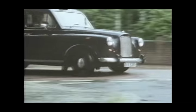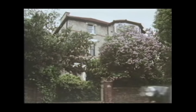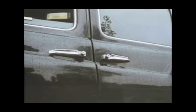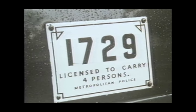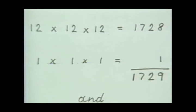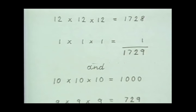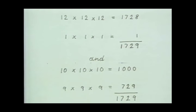No one can understand Ramanujan who does not understand his passion for numbers in themselves. He could remember the idiosyncrasies of numbers in an almost uncanny way. It was Littlewood who said that every positive integer was one of Ramanujan's friends. Hardy recalled: 'I remember going to see him when he was lying ill in Putney. I had ridden in taxicab number 1729 and remarked that the number seemed to me rather a dull one, and that I hoped it was not an unfavorable omen.' Ramanujan replied: 'No, it is a very interesting number. It is the smallest number expressible as a sum of two cubes in two different ways.'